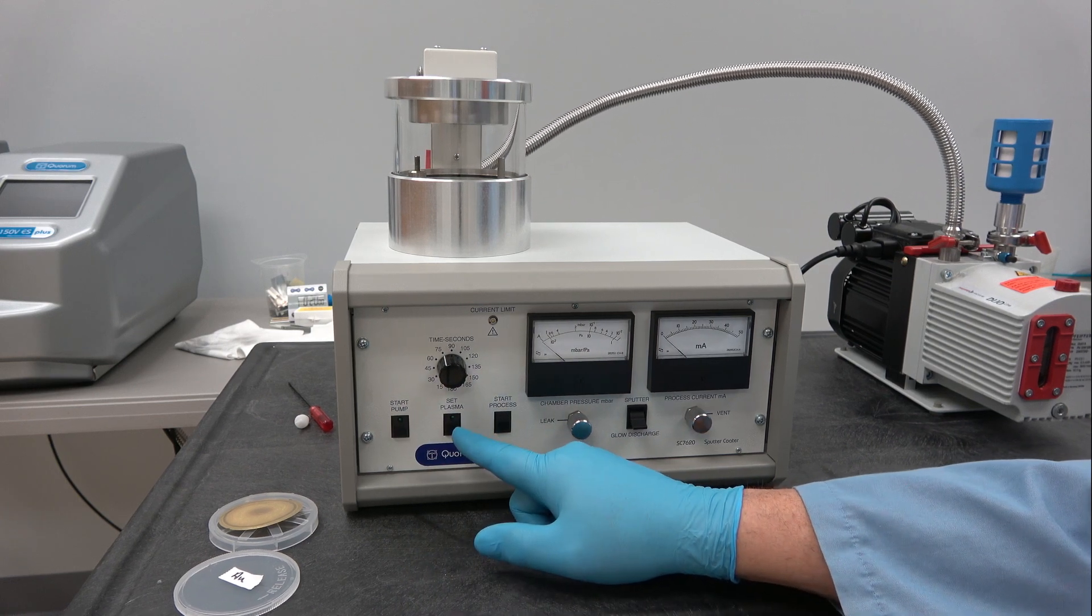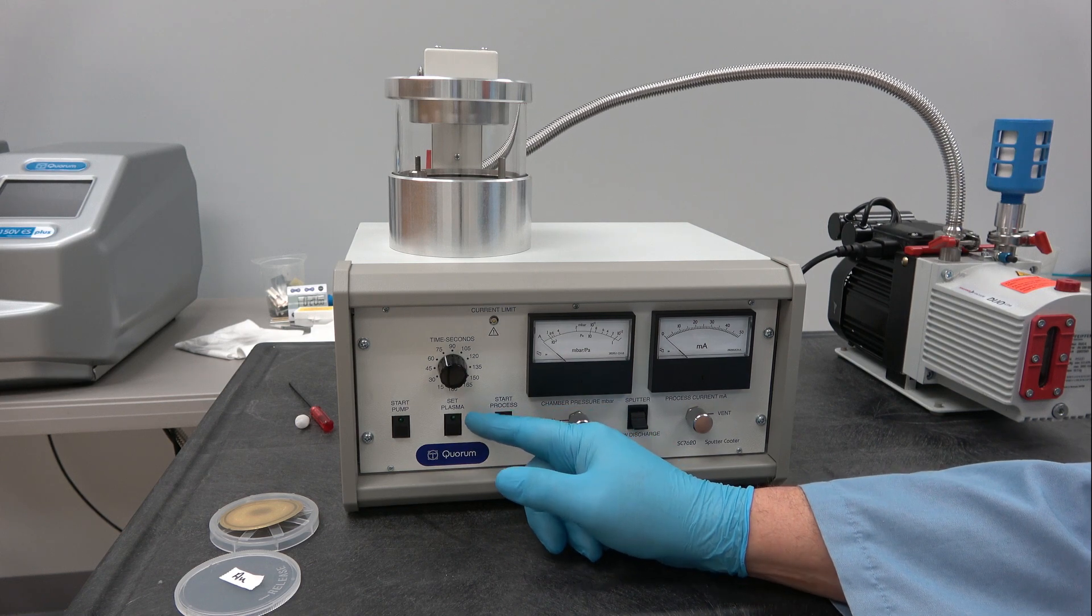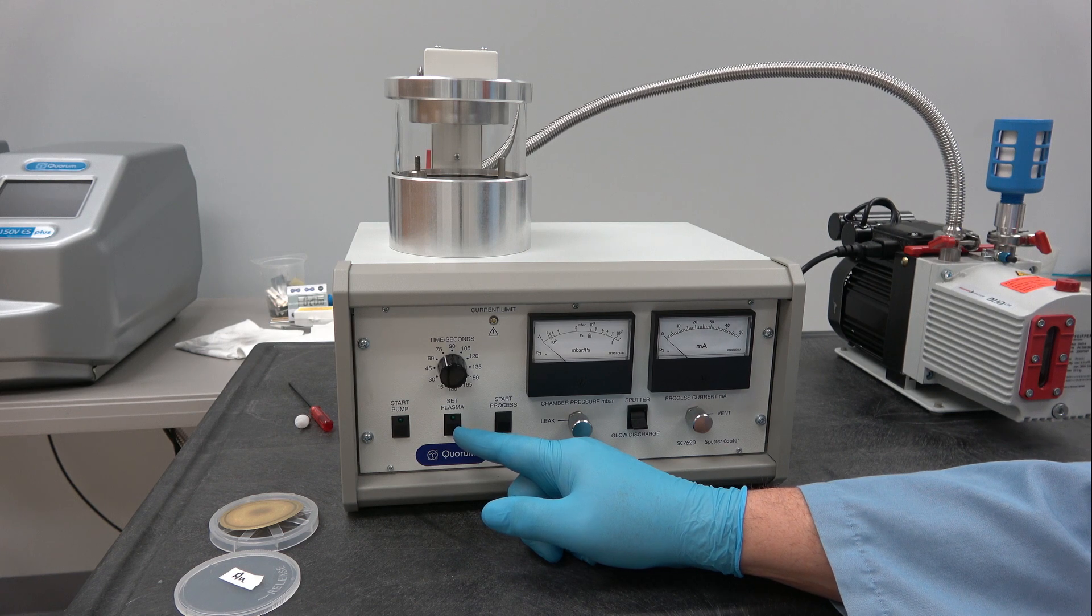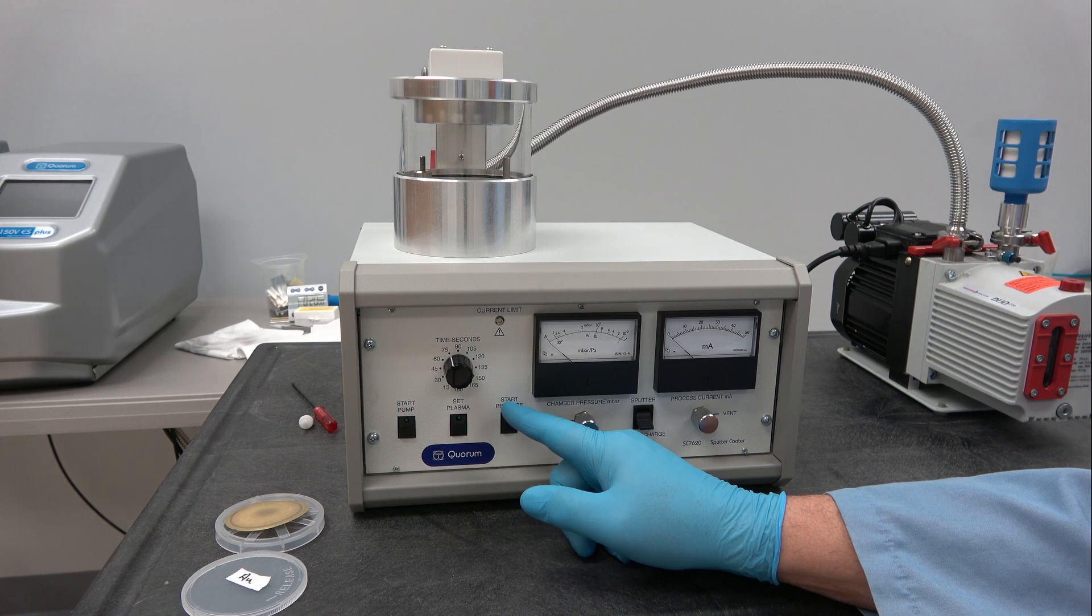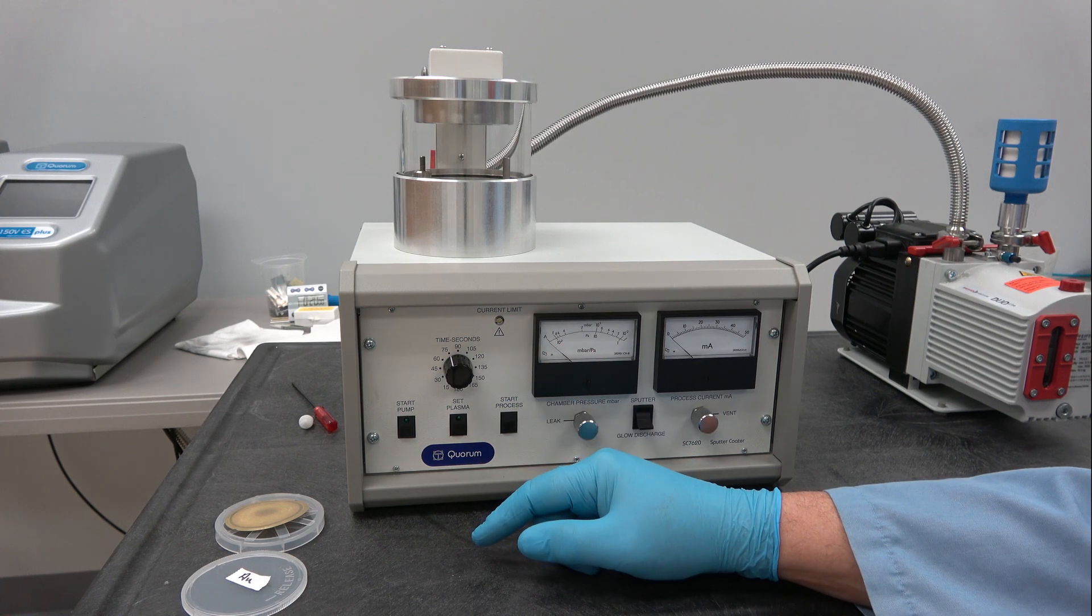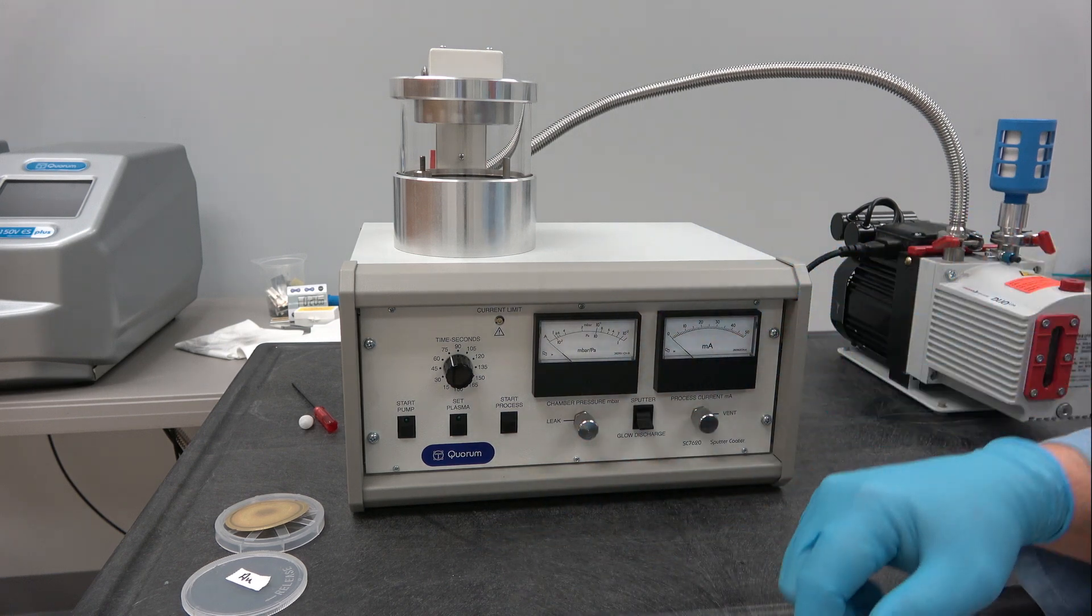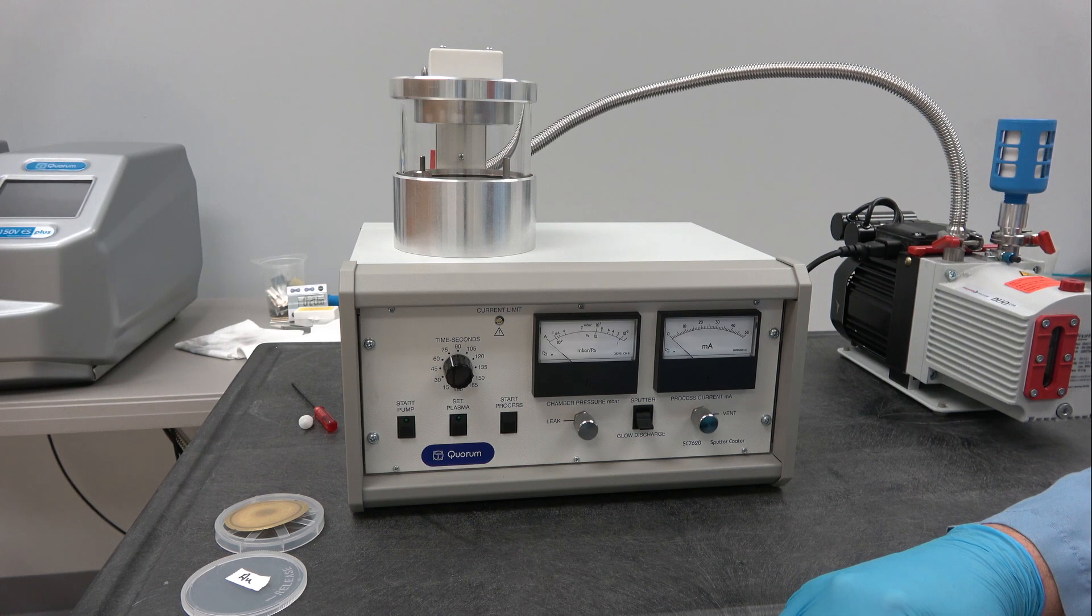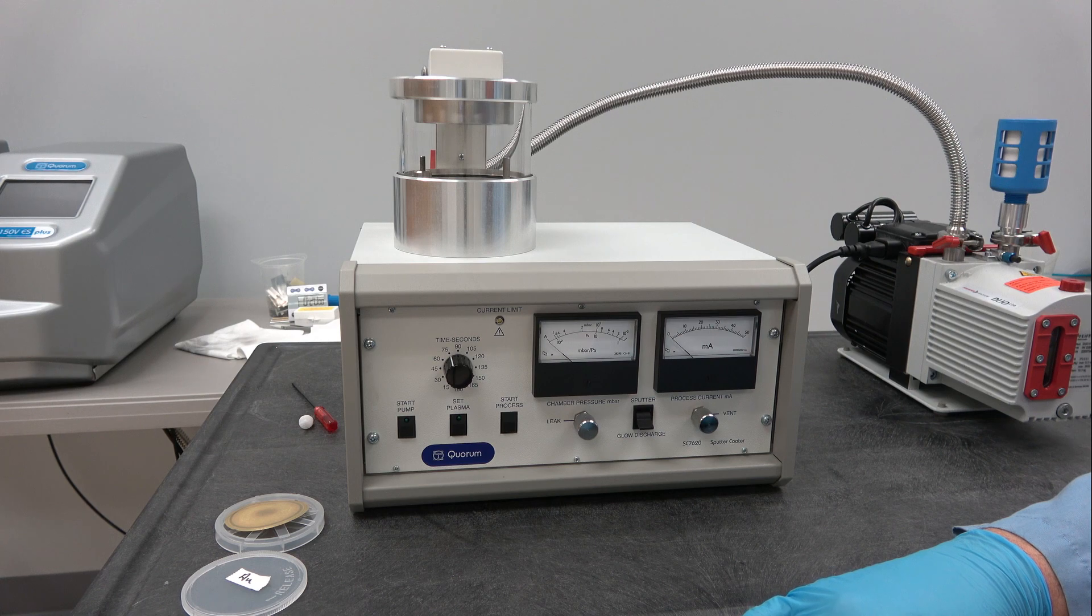Set plasma is where you can adjust the sputter pressure to attain the sputter current you desire. Start process starts the countdown timer to shut off. There is no shutter in this system because it's so simple. So your sample is going to get coated from the moment you light a plasma to the moment you turn it off.